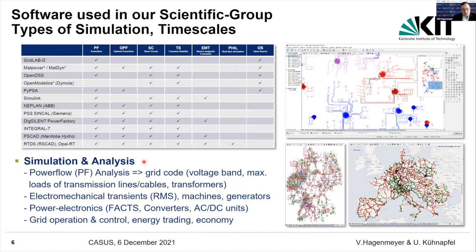What can we do with simulation analysis using these digital twins? We can do powerful analysis to check grid code — whether voltage bands are respected, lines are not overloaded, and transformers are capable of doing their job. We can study electromechanical transients to verify stability, including machines, generators, power electronics, and new devices — modeling them first on the virtual side and then deploying in real life. This covers all aspects of grid operation, control, economy, and energy trading.